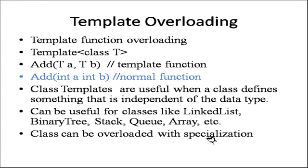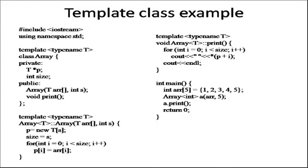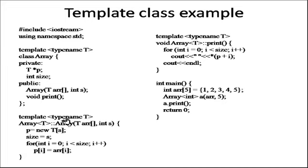A class can be overloaded with specialization. Sometimes a class is overloaded with a template data type and also with a specific data type. Overloading with specialization means we are passing just one data type using the class template. Here is an example: template <typename T> class Array with a private pointer and size. Array is a constructor, and void print is a function. Both the constructor and functions are defined outside the class. When defining anything outside the class, you have to mention the template type.